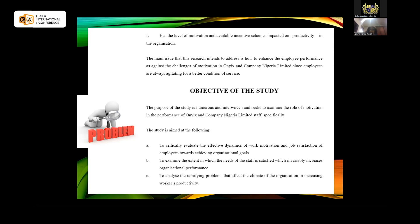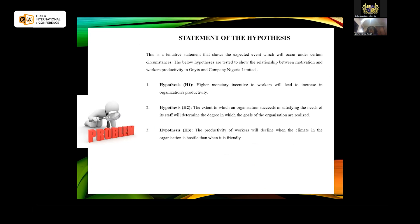The objectives of the study include: to evaluate the effective dynamics of work motivation and job satisfaction of employees towards achieving organizational goals; to examine the extent to which the needs of staff are satisfied, which invariably increases organizational performance; and to analyze the problems affecting the organizational climate and increasing workers' productivity. Three hypotheses were stated: first, higher monetary incentive to workers will lead to increased organizational productivity; second, the extent to which an organization satisfies the needs of its staff will determine the degree to which the goals of the organization are realized; third, productivity of workers will decline when the organizational climate is hostile rather than friendly.